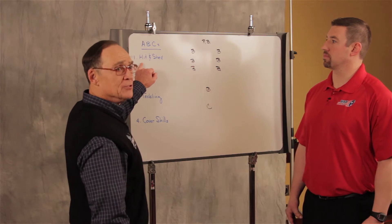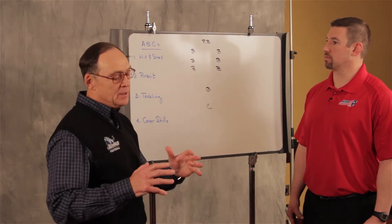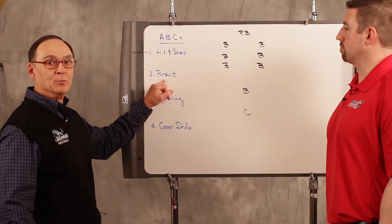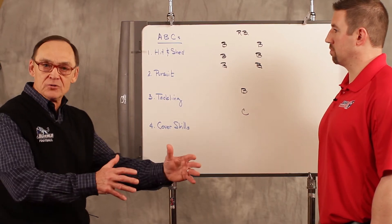Number one is what we call the hit and shed which is taking on blockers and disengaging. Number two is once we leave the blocker to pursue from the blocker to the ball carrier.